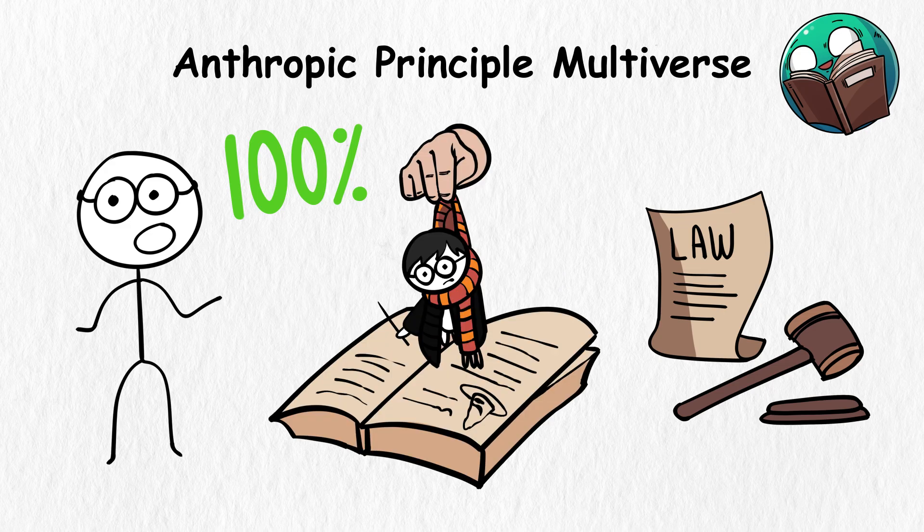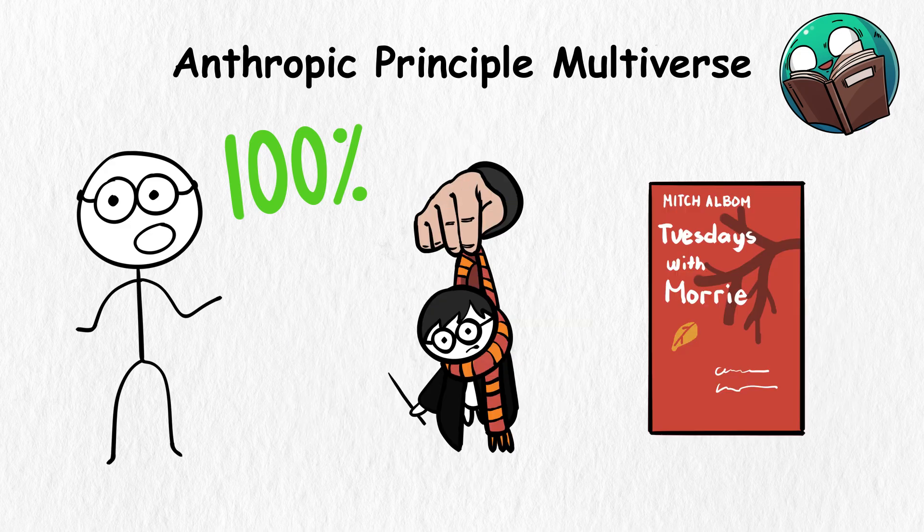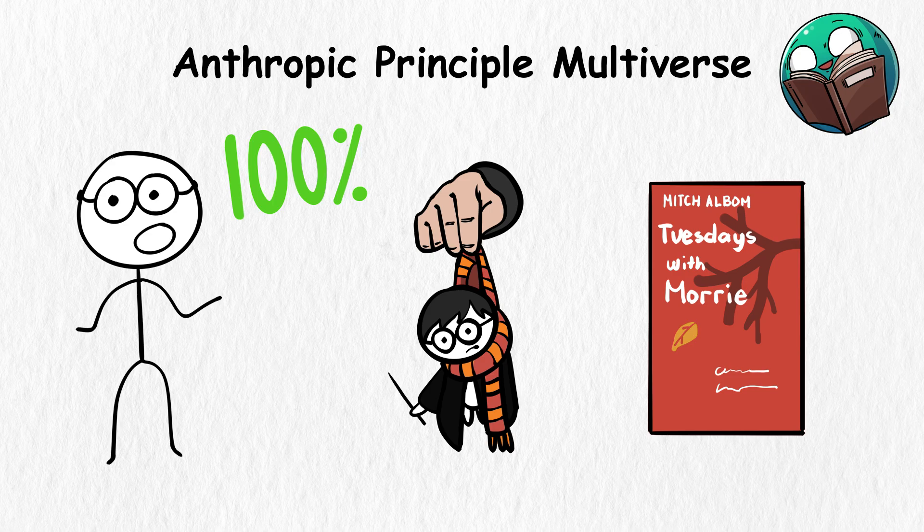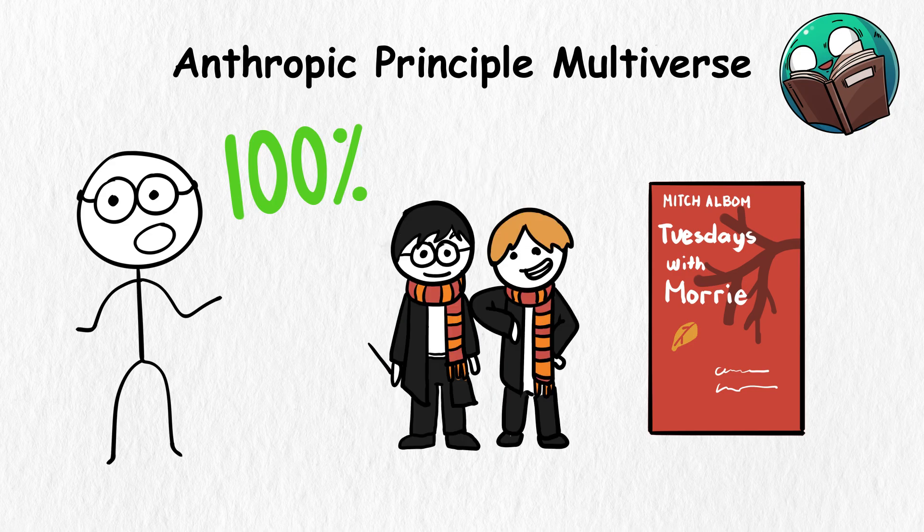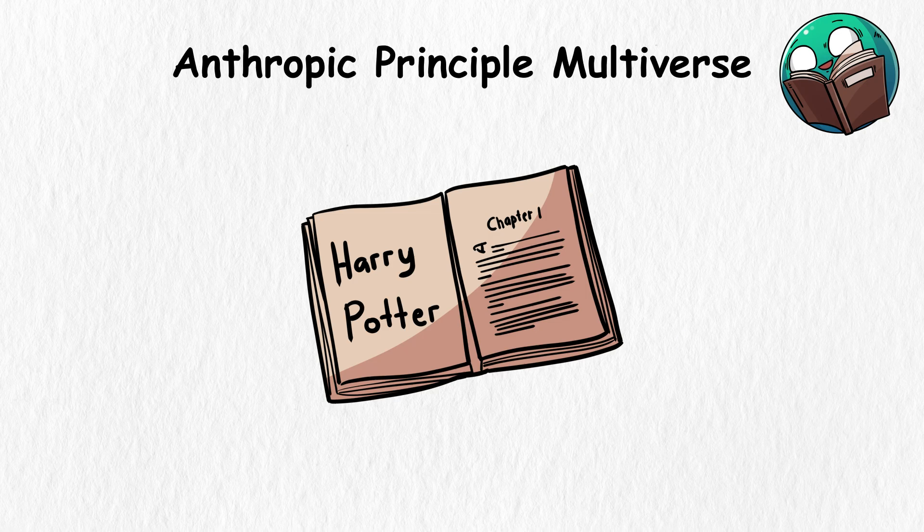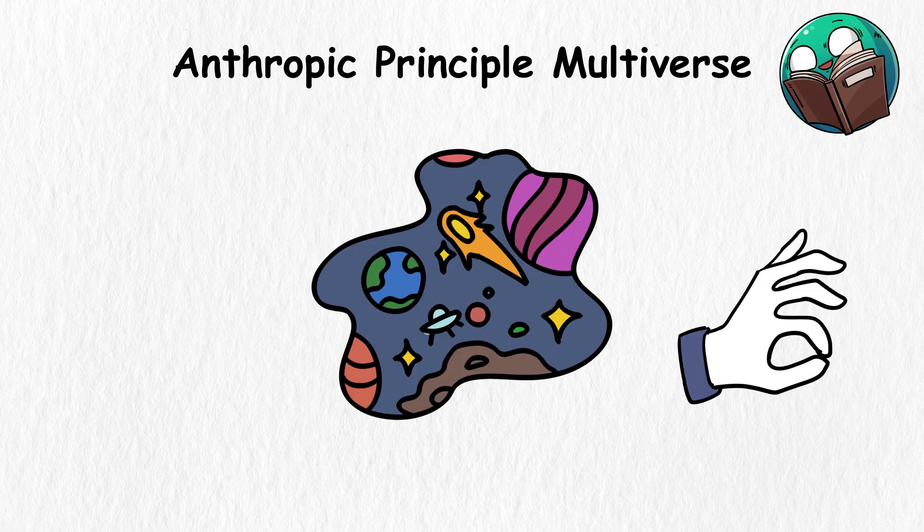If we removed Harry Potter from his book and transferred him to Tuesdays with Morrie, it's clear that he doesn't fit in that book. But he exists in his book precisely because that book was written to fit him perfectly. It's just like how our universe is perfect for our existence.